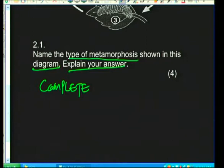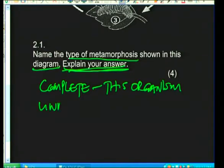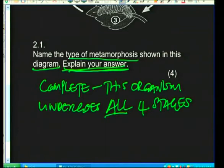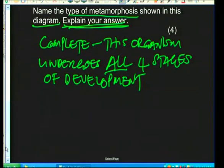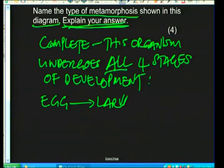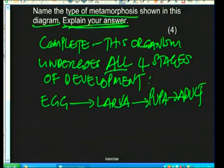Explain your answer: this organism undergoes all four stages of development — eggs, then the caterpillar which is the larva, then the cocoon-like structure which is the pupa, and then the adult. When an organism goes through all four stages, we say complete metamorphosis has taken place. If any one stage is missing, it is incomplete metamorphosis.